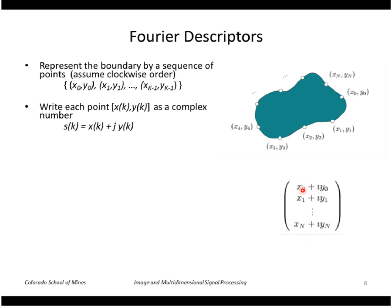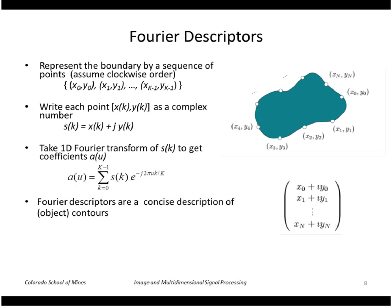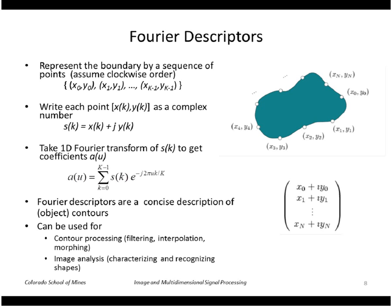We then take the one-dimensional Fourier transform of that sequence to get a sequence of Fourier coefficients, and these are our Fourier descriptors. As we'll see, they're a concise description of the object contour. They can be used for things like we can change the shape of the contour, we can filter the shape, we can interpolate it, we can morph it. We can also use it for characterizing and recognizing shapes.